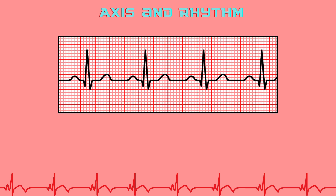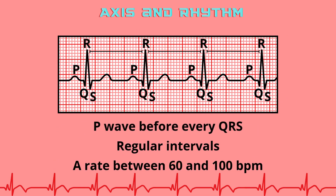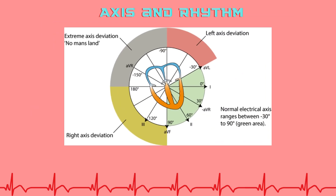A normal ECG rhythm is a sinus rhythm, originating from the sinoatrial node with a P-wave before every QRS, regular intervals, and a rate between 60 and 100 beats per minute. The electrical axis should fall between minus 30 and plus 90 degrees. Excess deviation may be an early clue to structural or conduction abnormalities.